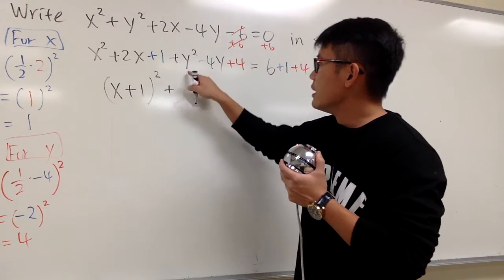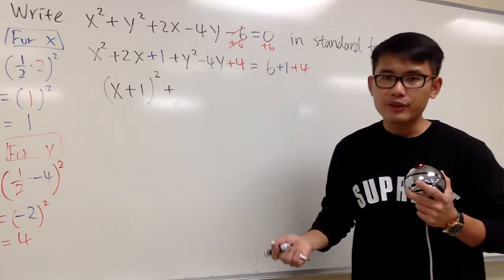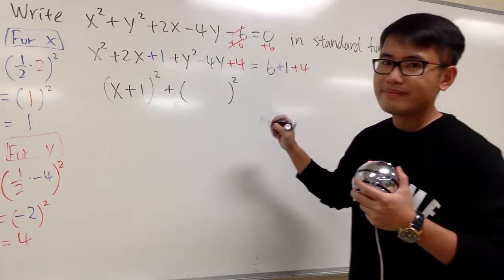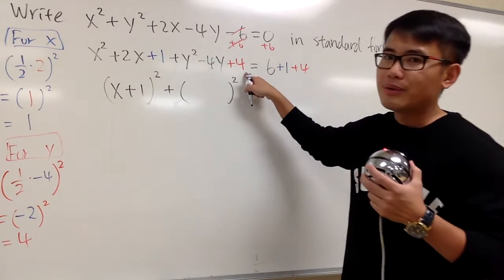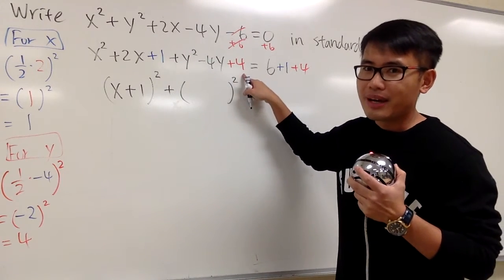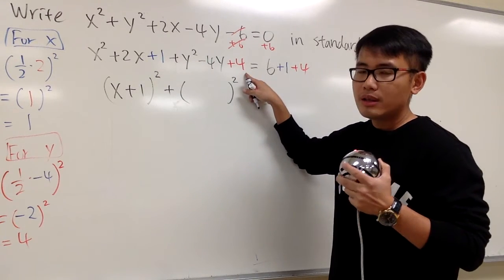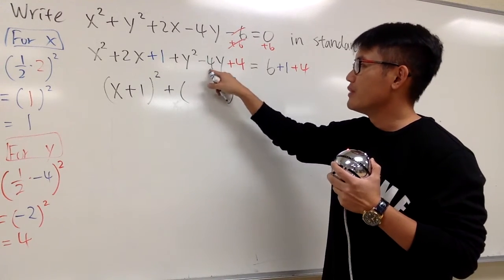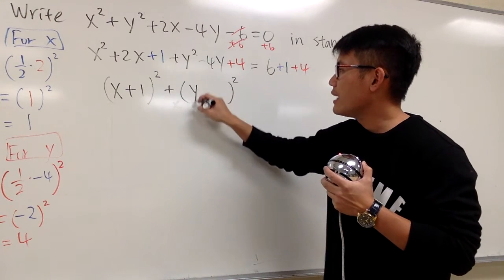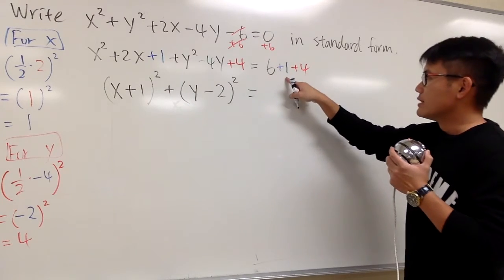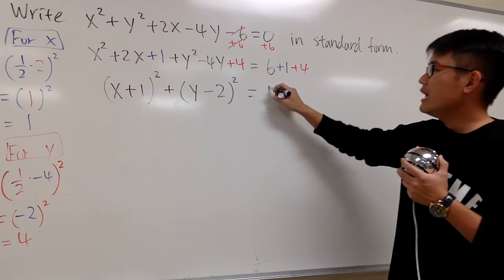Bring down the plus. These three terms, we can also factor it out. And it's also going to be something to the second power. You can factor this out. We have to get negative 2, negative 2. Right? Because negative 2 times negative 2 gives us positive 4. And together, they add up to negative 4. So it will be y minus 2. And on the right-hand side, 6 plus 1 is 7. 7 plus 4 is 11.